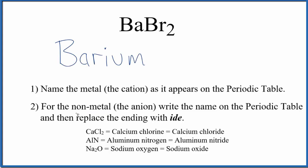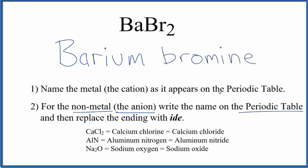Next, we write the name for the non-metal, the anion, as it appears on the periodic table — that's bromine — but then we replace the ending, the -ine, with -ide.